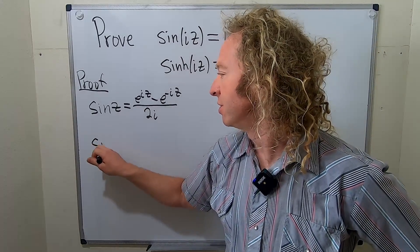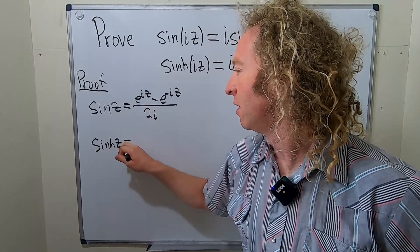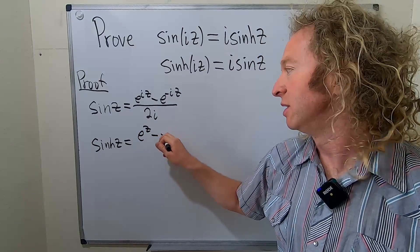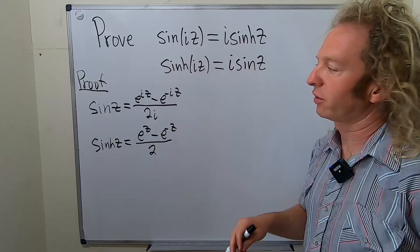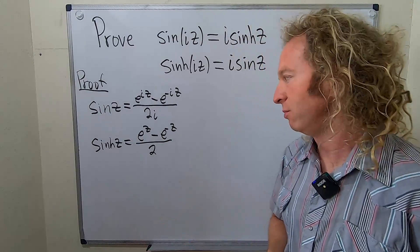Well, it's simply sinh z and it's just e to the z minus e to the negative z all over 2. So it's just like the real version. So very easy to memorize.